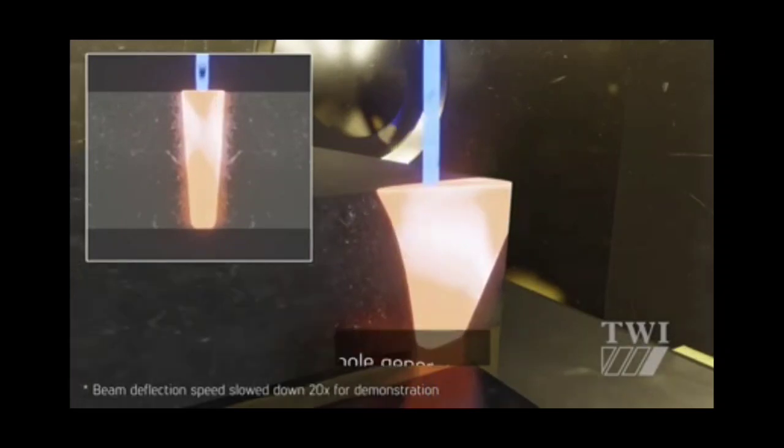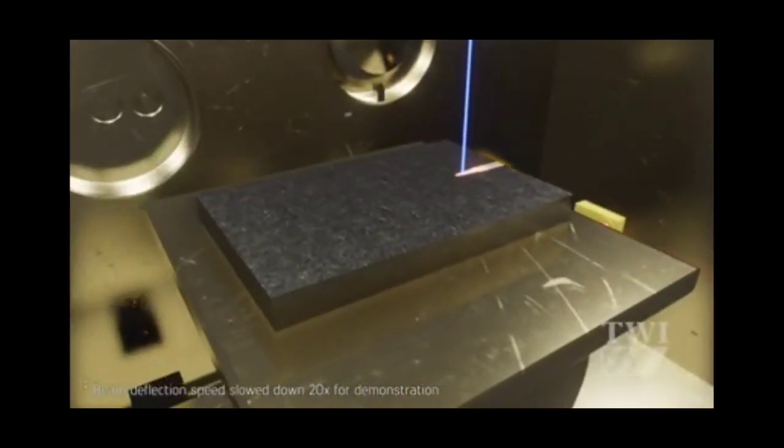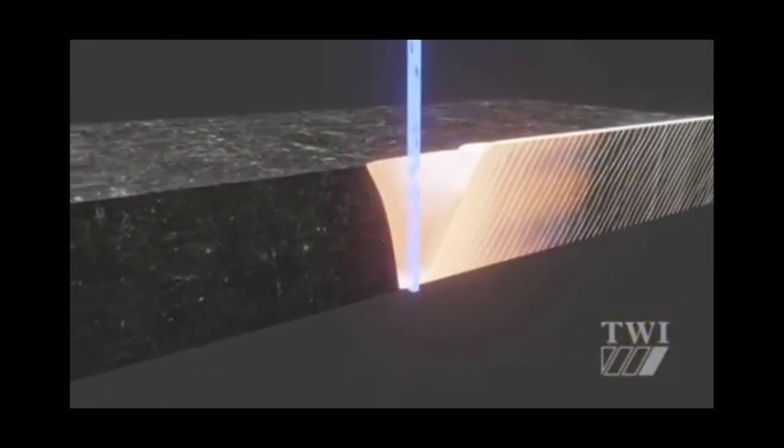Electron beam is capable of welding workpieces with thickness from 0.1 millimeter to 150 millimeter of steel and up to 500 millimeter of aluminum.